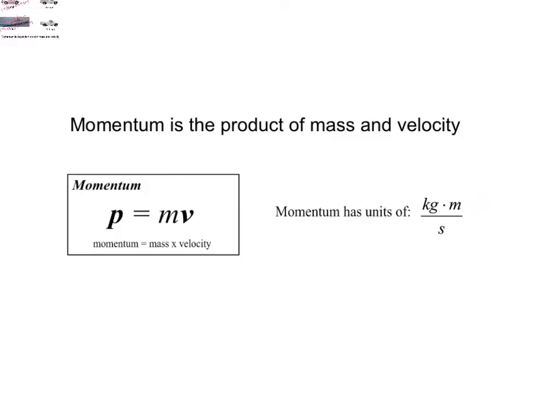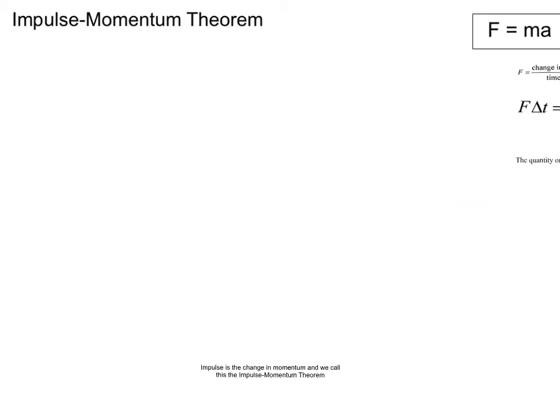And that connection we call the impulse momentum theorem, which we'll look at next. So, by analyzing the equations for impulse and momentum, it should be clear that they're connected. Both equations show that the units for both impulse and momentum are kilogram meters per second. But, the question is just how are they connected?